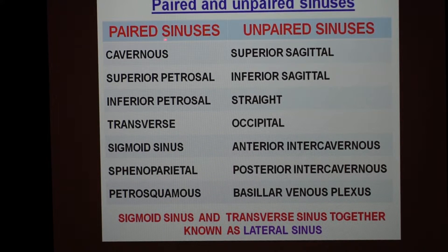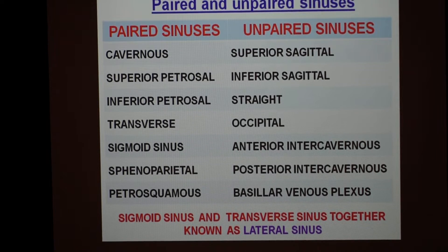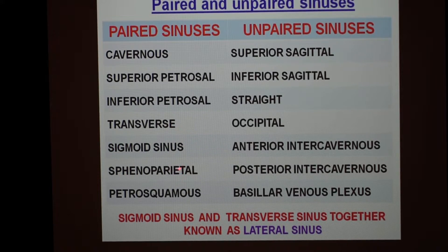The dural venous sinuses can be classified as paired and unpaired. The unpaired ones we have already seen: the superior sagittal sinus, inferior sagittal sinus, straight sinus, and the occipital sinus — these four we saw in the previous segment. Apart from these, there are the anterior intercavernous and the posterior intercavernous sinus and the basilar venous plexus, which are also unpaired. In the paired group, we have the cavernous sinus, superior petrosal sinus, inferior petrosal sinus, transverse sinus, sigmoid sinus, sphenoparietal sinus, and the petrosquamous sinus, which is occasionally present.